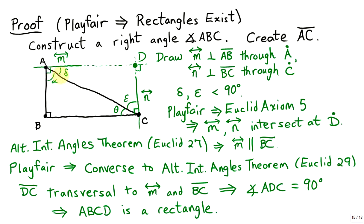The angles marked here show that alpha plus delta equals 90 degrees, which means angle delta is less than 90. Similarly, theta plus epsilon add up to 90 degrees, therefore epsilon is less than 90. Because these two angles are less than 90 degrees, we know that line M and line N must intersect at some point, which we'll call point D. This intersection is guaranteed by Euclid's axiom 5.